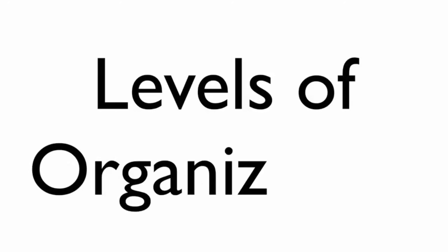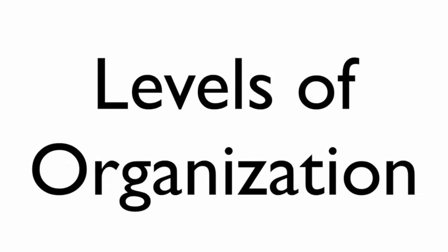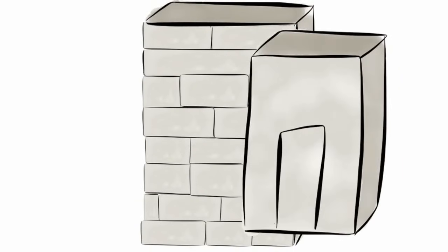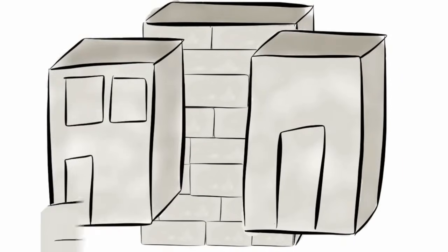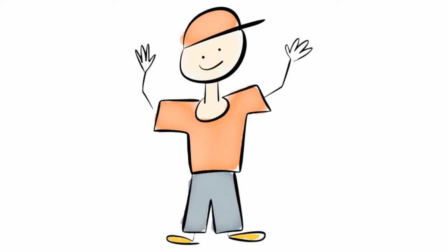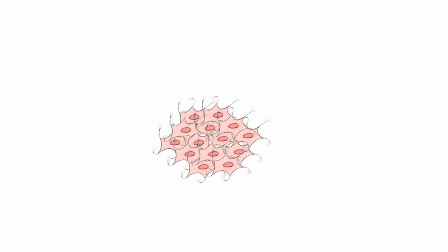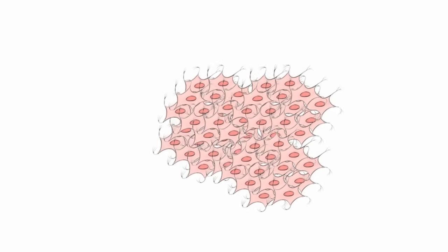Levels of Organization. When building a city, you start with bricks. Many bricks joined together makes a wall. Walls working together make a building, and many buildings complete the city. The human body is put together in a similar way. Humans start with cells. Many cells joined together make tissue. Tissue working together make an organ, and many organs make an organ system.